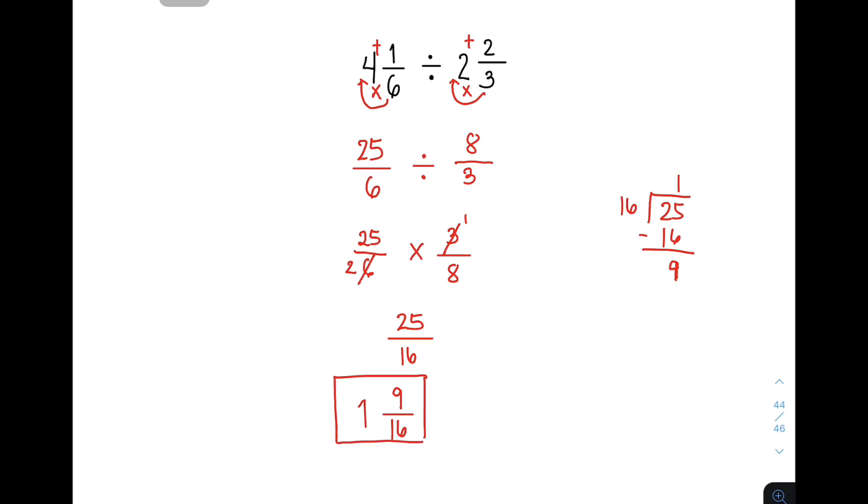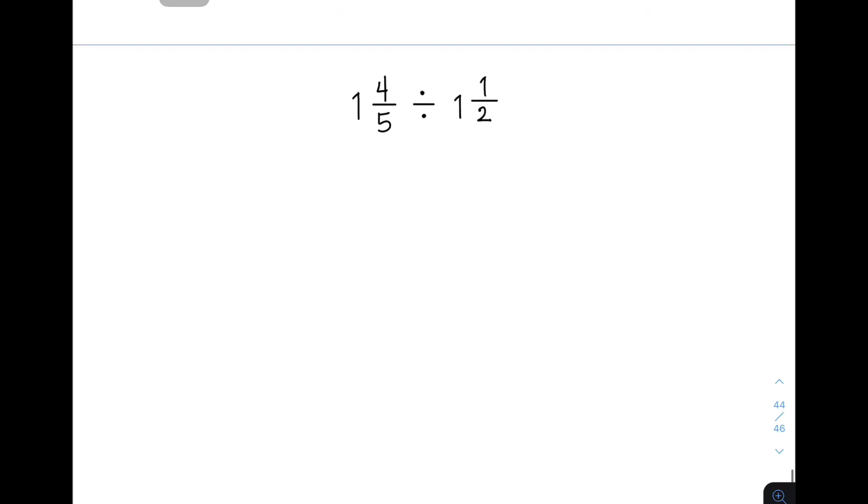Okay? Let's move on with the next example. We have here 1 and 4 over 5 divided by 1 and 1 half. Tandaan, you need to multiply and add 5 times 1, that is 5, plus 4, that is 9. Then copy your original denominator which is 5 divided by 2 times 1, that is 2, plus 1, that will give you 3. And then copy the denominator of your original mixed number which is 2.